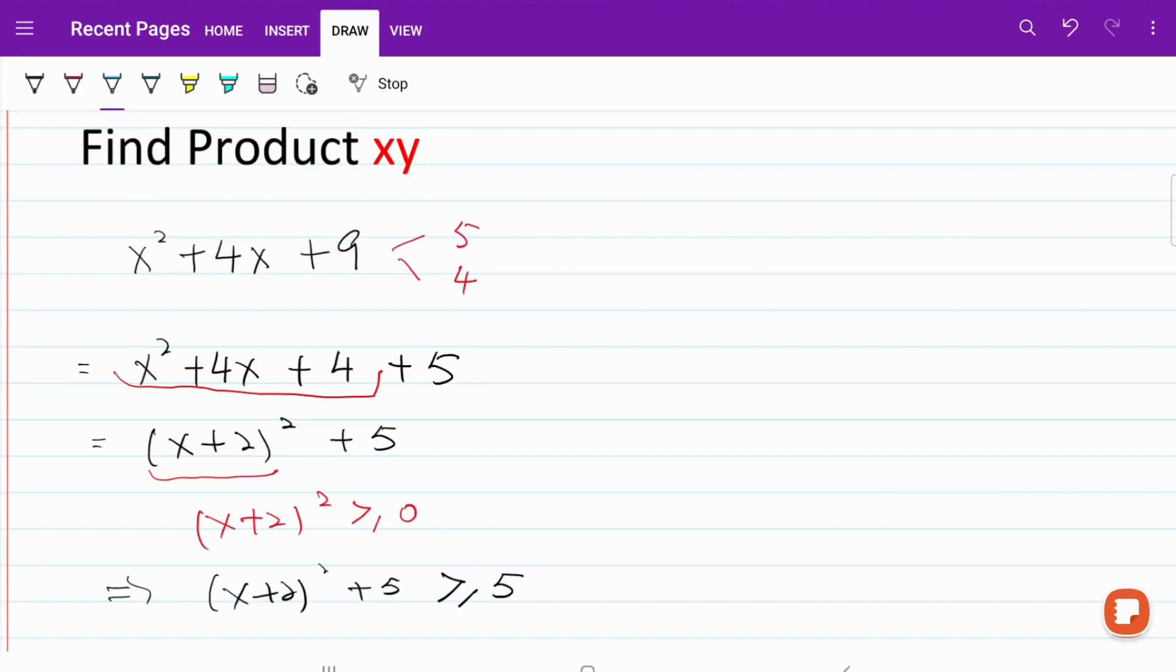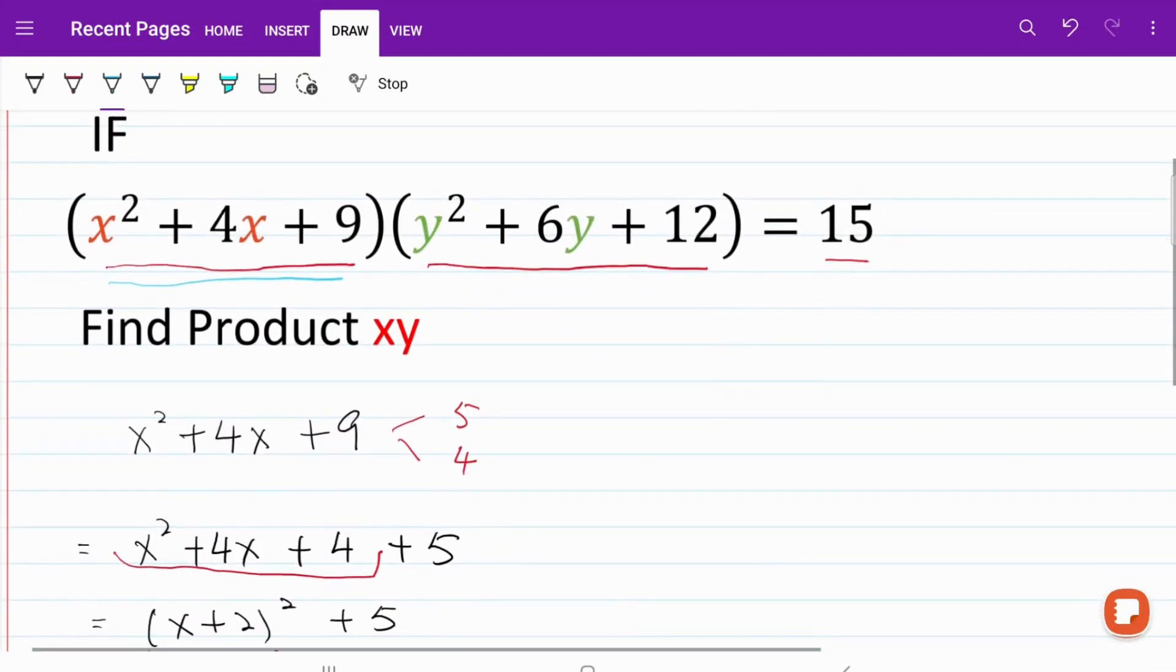Let's go ahead and look at the second quadratic function. Again, we'll write it down. I have y squared plus 6y plus 12. We will try to rewrite 12 as the sum of 9 and 3. When we do that, we can write this expression as y squared plus 6y plus 9 plus 3.